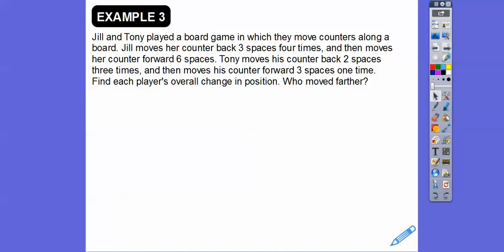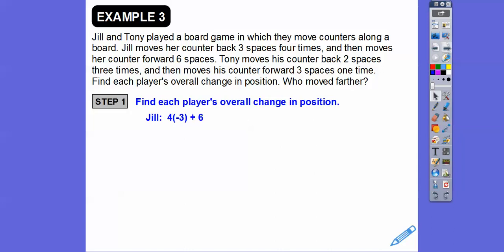Jill and Tony played a board game in which they moved counters along the board. Jill moved her counter back three spaces four times — that's four times negative three — then moved her counter forward six spaces, so plus six. Tony moved his counter back two spaces three times — three times negative two — then moved forward three spaces, so plus three. Find each player's overall change in position.